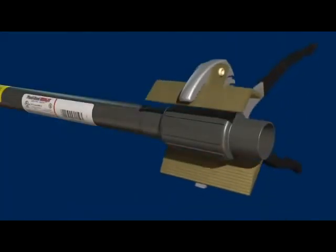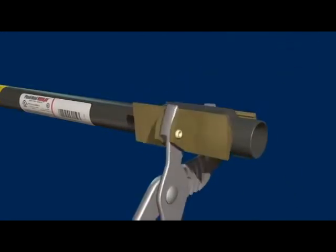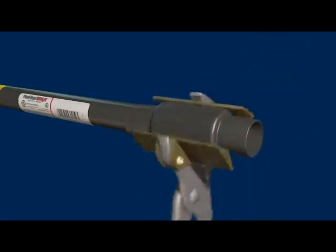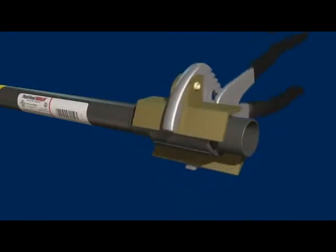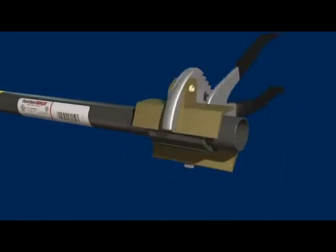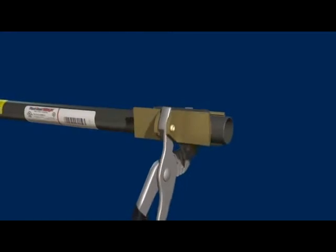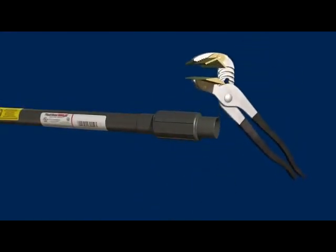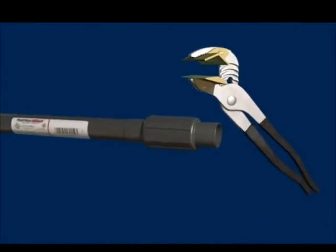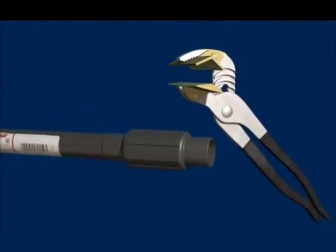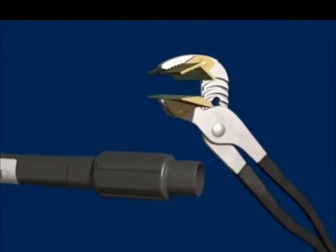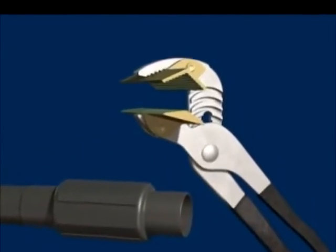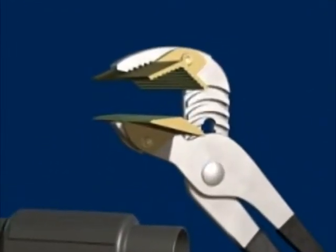PlastiBond Z-wrenches are designed to replace standard adjustable pliers. Z-wrenches feature extra-wide jaws which spread the clamping force, enabling the tools to grip securely without marring the surface of the conduit. The V-shaped upper jaw allows the wrench to accommodate a wide range of conduit sizes. Shallow grooves in the upper and lower jaws provide an excellent grip. Z-wrenches are available in two sizes to fit one-half through two and one-half inch conduit.